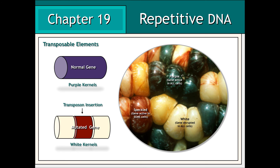In maize, kernels that are uniformly purple in color contain a gene that produces said purple pigment. Barbara McClintock showed that the insertion of a transposon into this gene silenced its expression. Therefore, the kernels appeared uniformly white. There were some kernels, however, described as being speckled, that had some regions expressing the purple phenotype, whereas others were uniformly white.